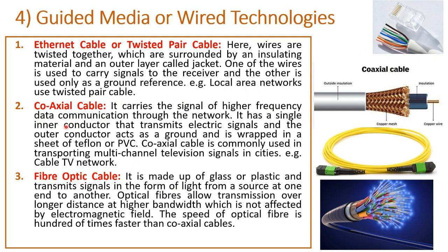Now let us understand the coaxial cable. It carries signals of higher frequency for data communication through the network — high frequency data can be transferred using this coaxial cable. It has a single inner conductor that transmits electric signals, and the outer conductor acts as a ground and is wrapped in Teflon or PVC for insulation. Coaxial cable is commonly used in transporting multi-channel television signals, like cable TV networks.